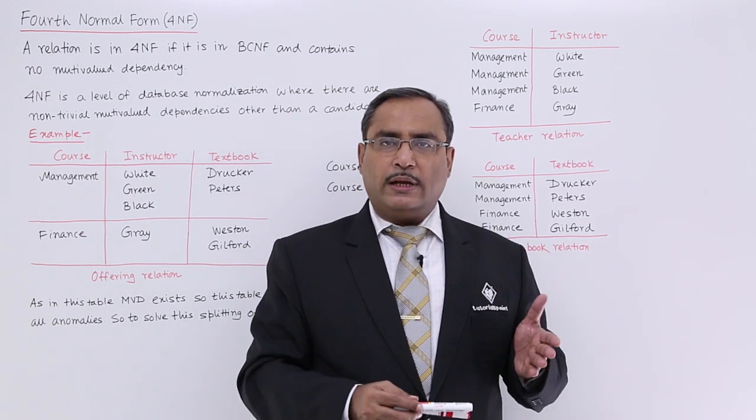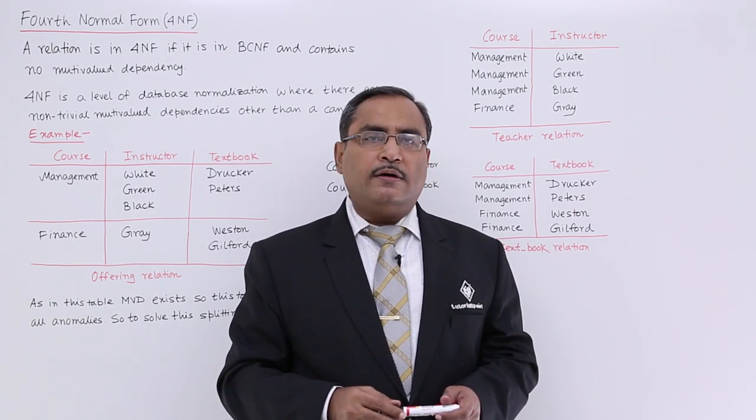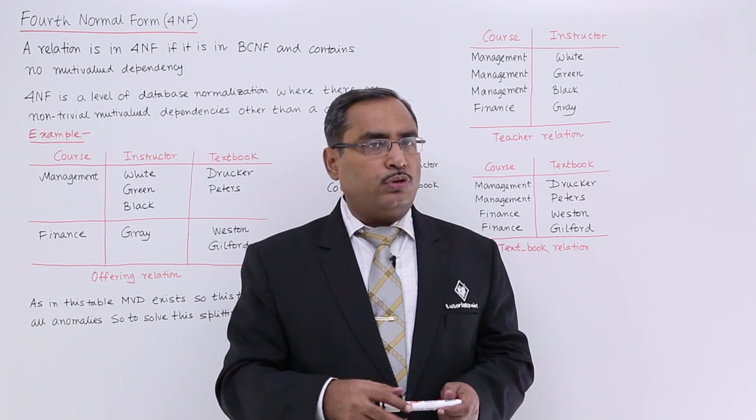Sometimes we can also call BCNF as 3.5NF. Now, what is the BCNF and what is fourth normal form?